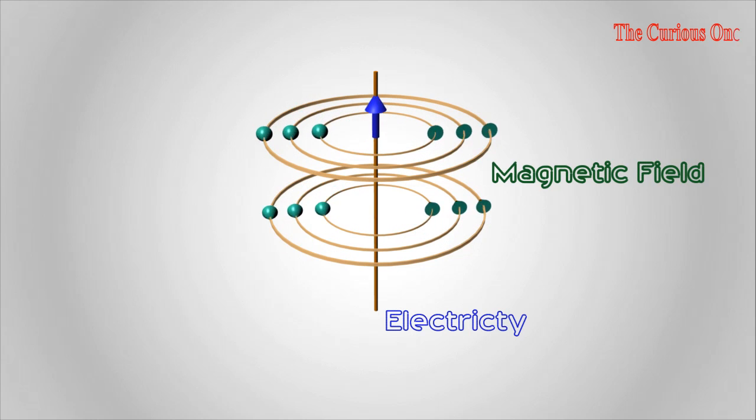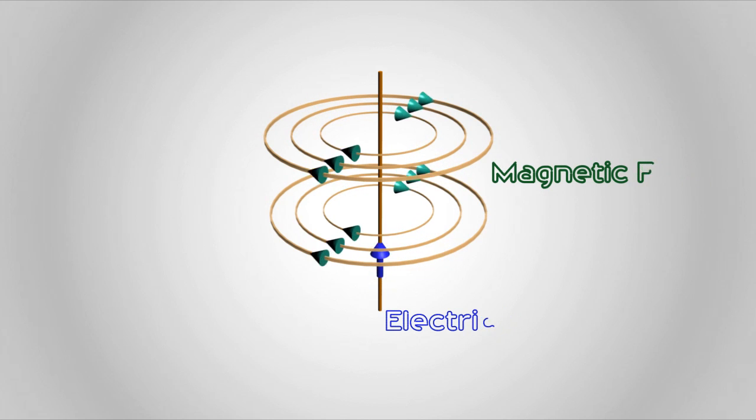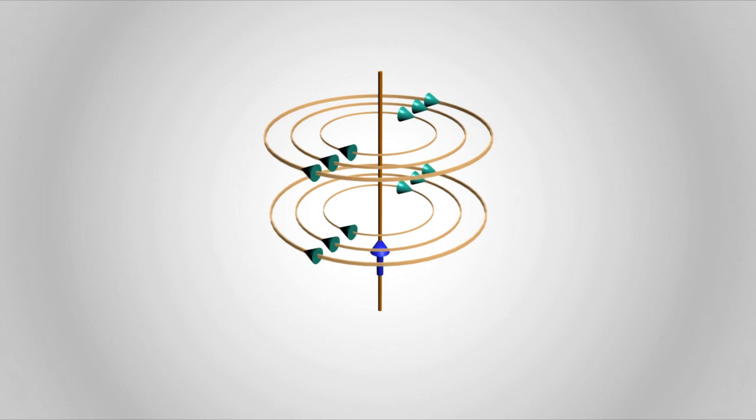To understand this, consider a current-carrying conductor. Here, the blue arrow indicates the direction of current. Due to this current, a magnetic field produces around the conductor. If the direction of current is reversed, then the magnetic field also reverses.